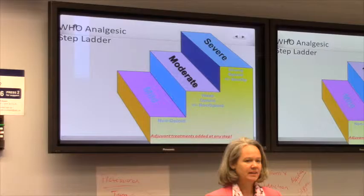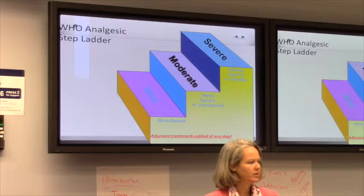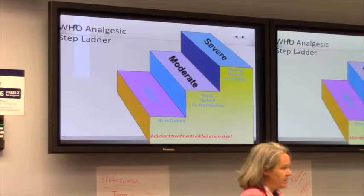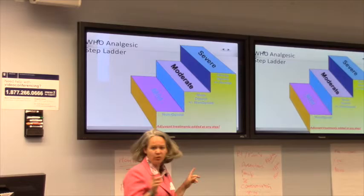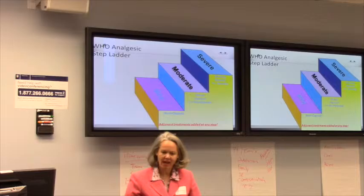People say, 'They're on diabetes — we can't put them on a steroid.' Well, you either increase their oral hypoglycemics or address it with insulin; that should not be a barrier. 'It's going to make them confused or agitated' — give a trial and see. There's also a fourth step on the WHO ladder.